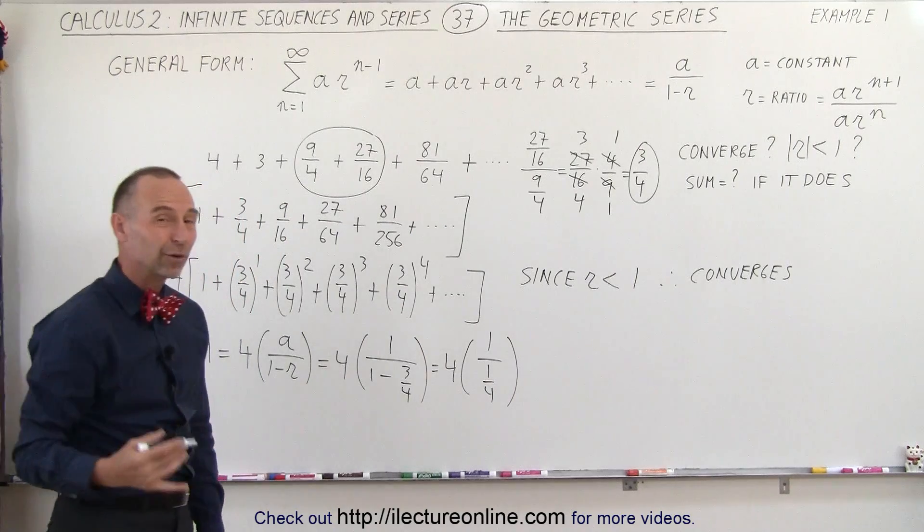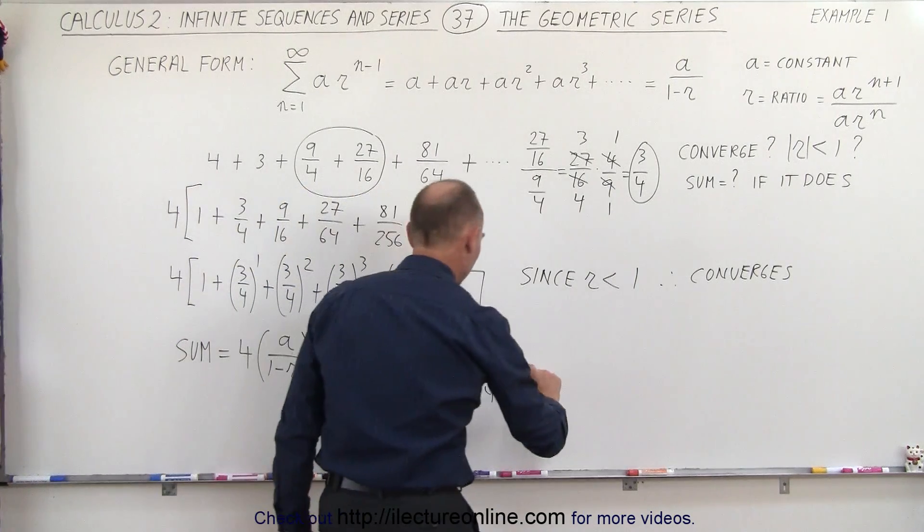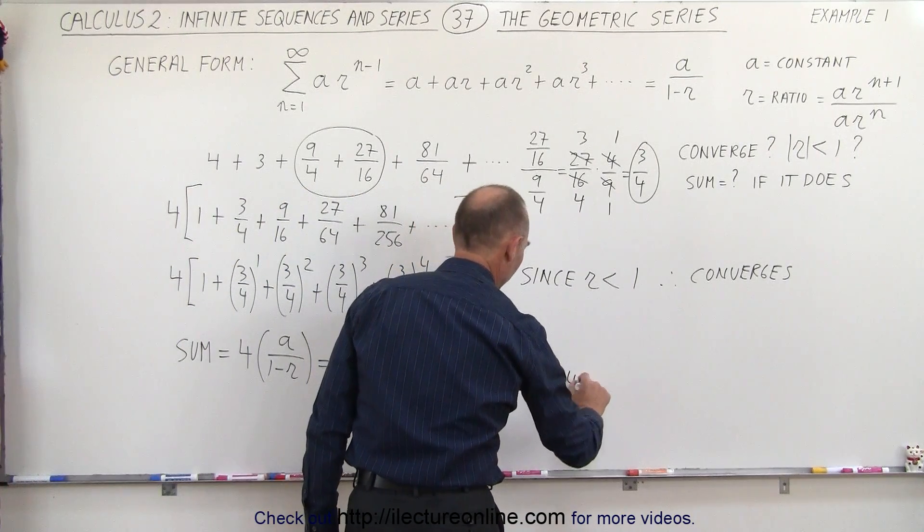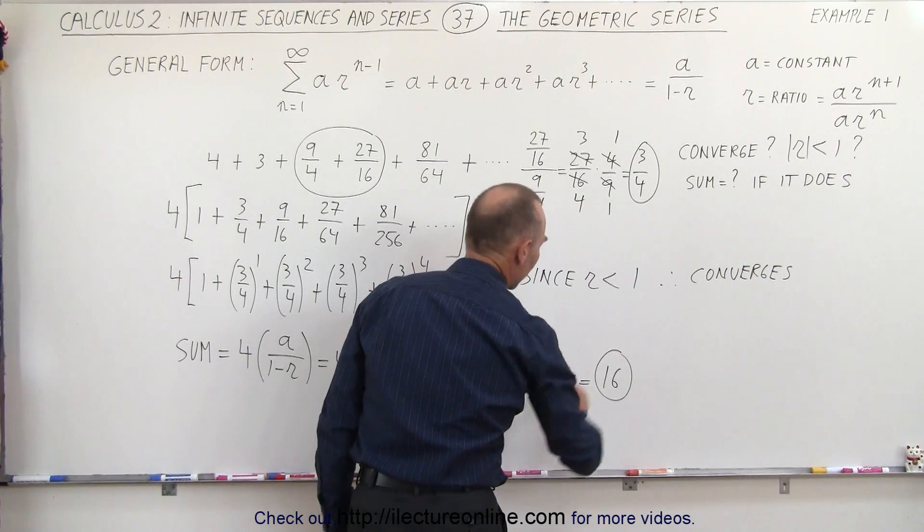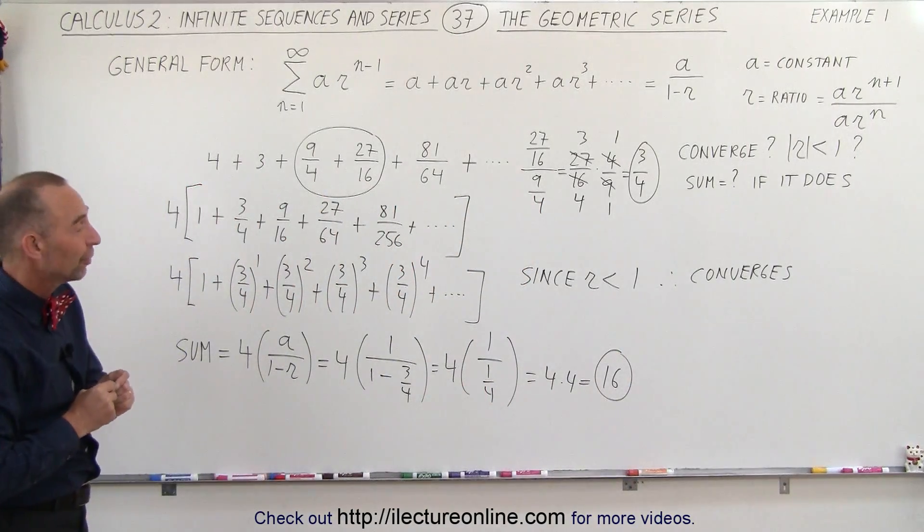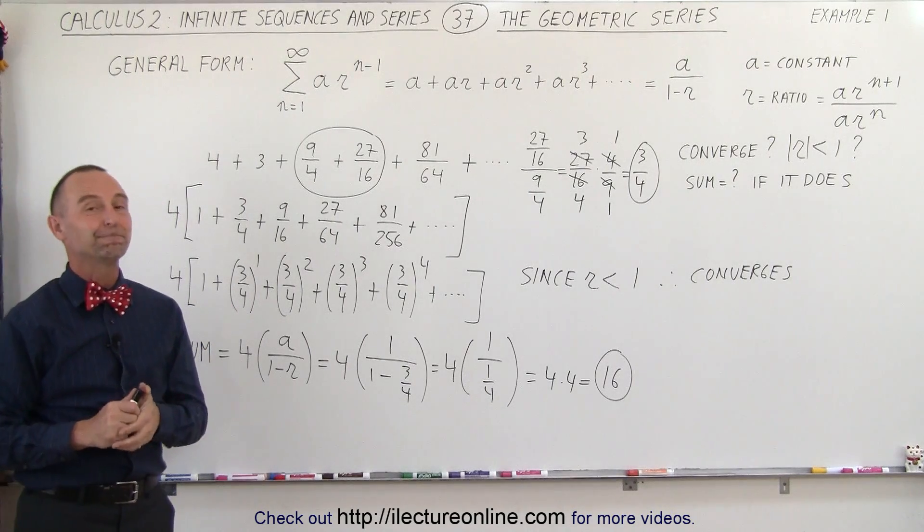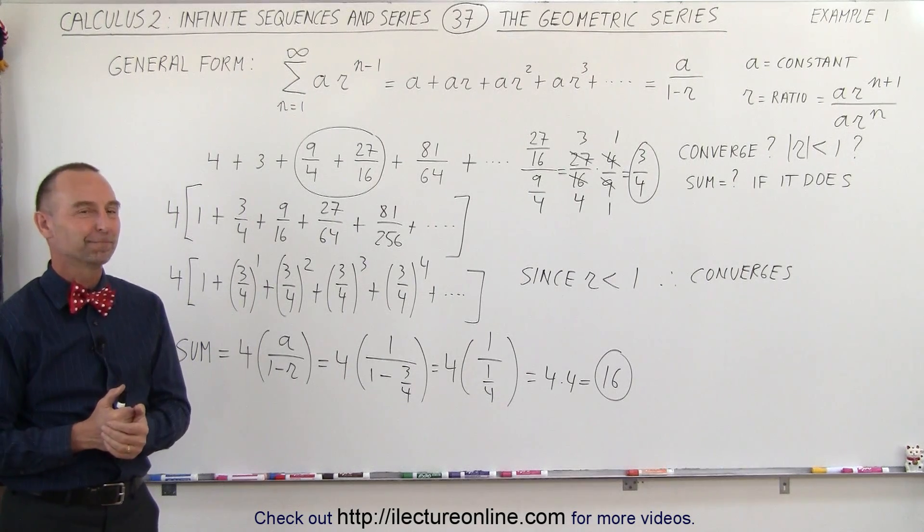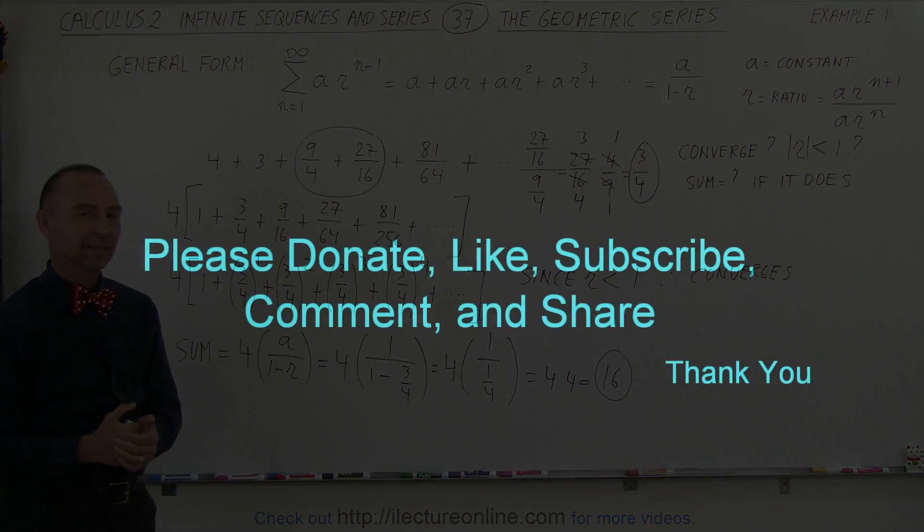So this becomes 4 times 1 divided by 1 quarter. And of course, divided by 1 quarter is the same as multiplying times 4. This is 4 times 4, which is 16. So we've determined that the series does indeed converge, and that the sum is equal to 16. And that's how it's done.